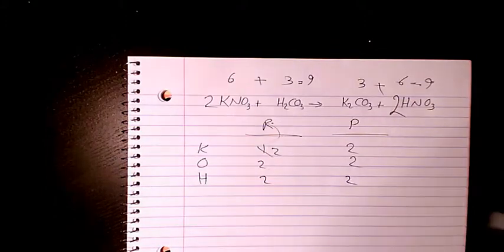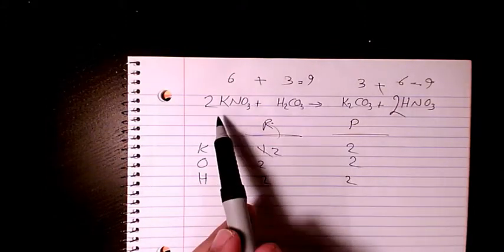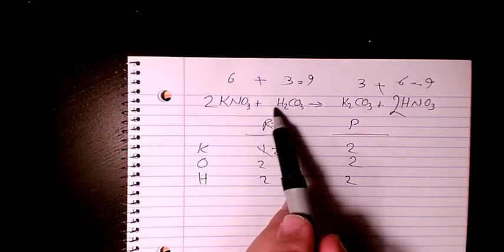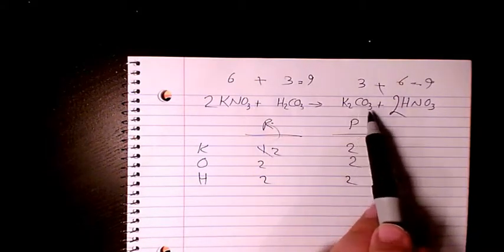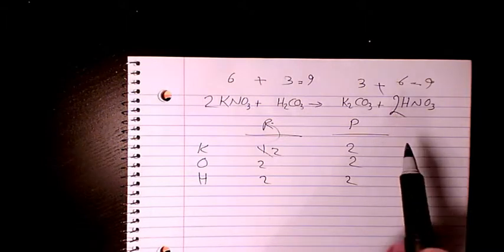So the equation is balanced now. Two moles of KNO3 plus one mole of carbonic acid gives one mole of potassium carbonate plus two moles of nitric acid.